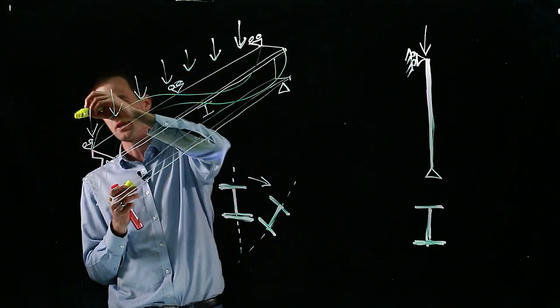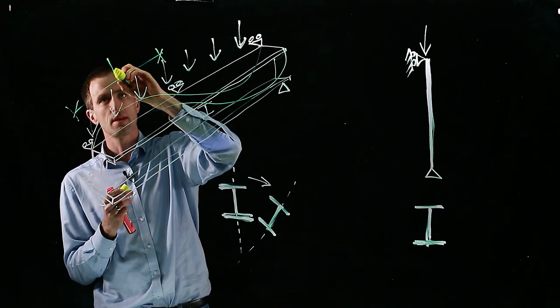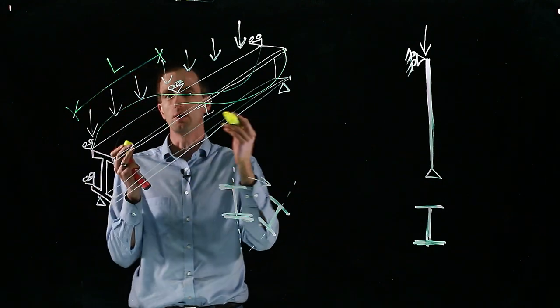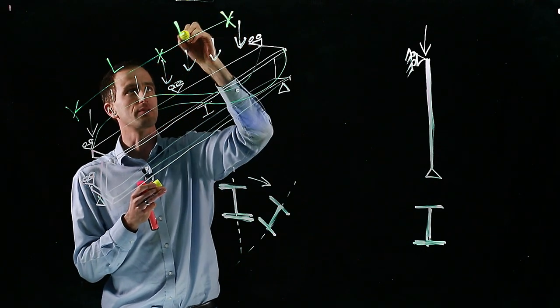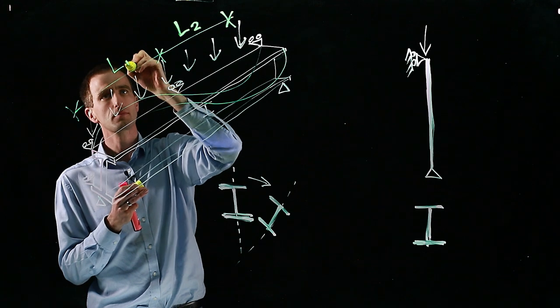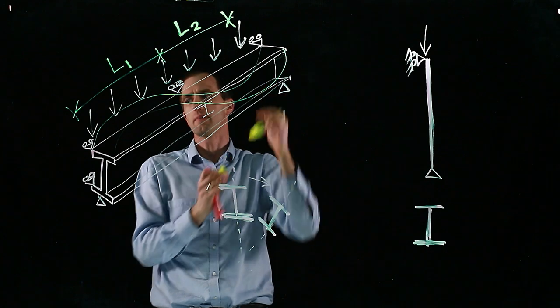And when we are now designing it, this length there, that is now our effective length or our L value. And so we will have two values on this, L1 and L2. And those would be the buckling lengths we would design. We work out the force in and then design it independently.